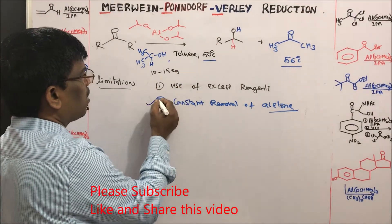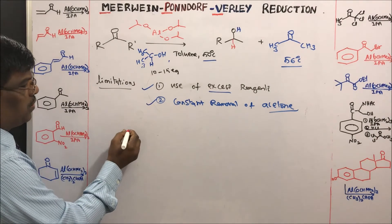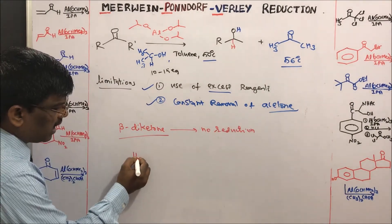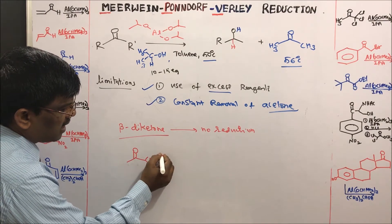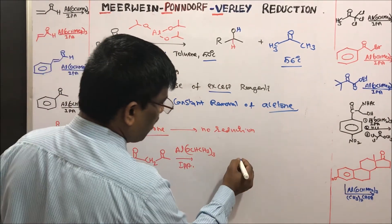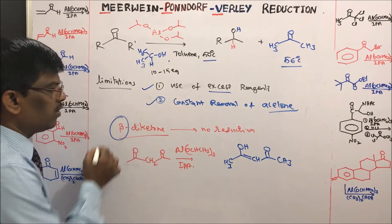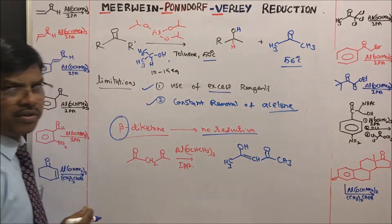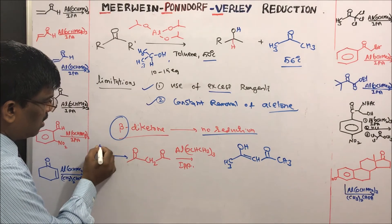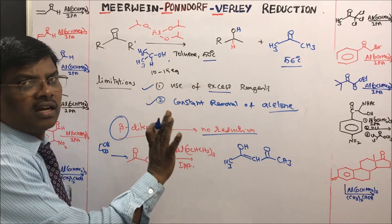This limitation of acetone removal can be overcome by distilling it out during the reaction. Another limitation is that beta-diketones are not reduced. For example, acetylacetone under MPV reduction in isopropyl alcohol gives no reduction because it exists predominantly in the enol form. Due to this enol form, beta-diketones are not reduced. To reduce them, one ketone must first be protected as an acetal using glycol.